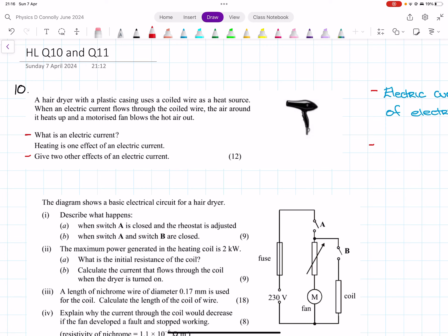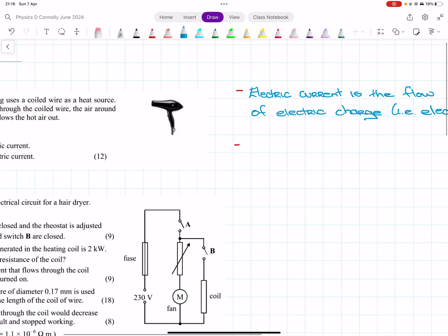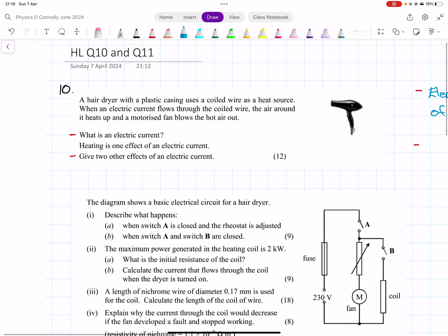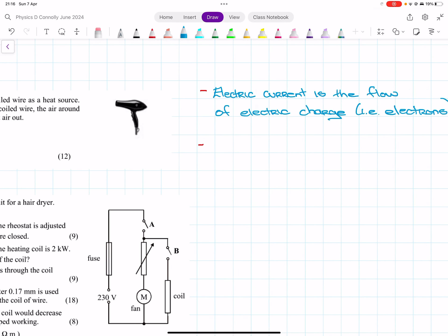So two other effects are—heating—so the chemical effects and the magnetic effect are the other two.